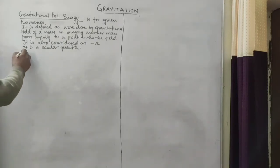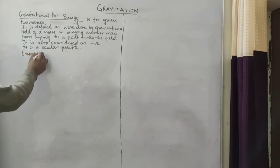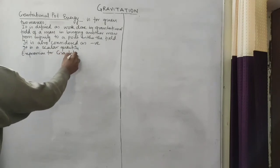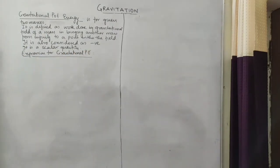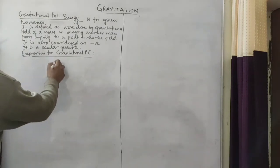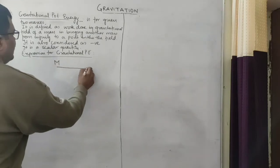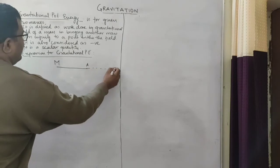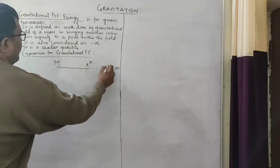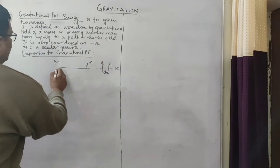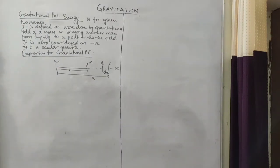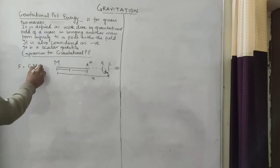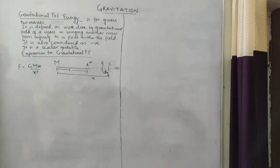Expression for gravitational potential energy: for a given mass, let that mass be M. We have to find the potential energy at point A. We have to bring another mass — this is the same diagram we discussed in gravitational potential. This distance is R and this distance is X. But here, there is no unit mass; we have to consider a mass m. So let the gravitational force acting on mass m be G·M·m upon X squared at point C.